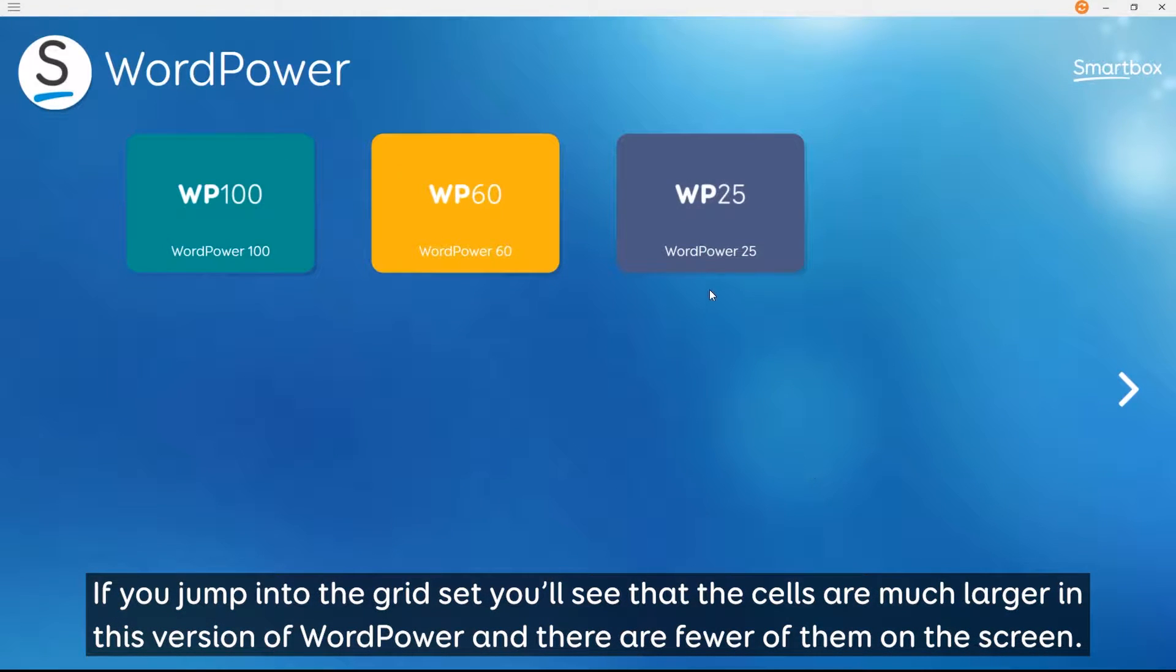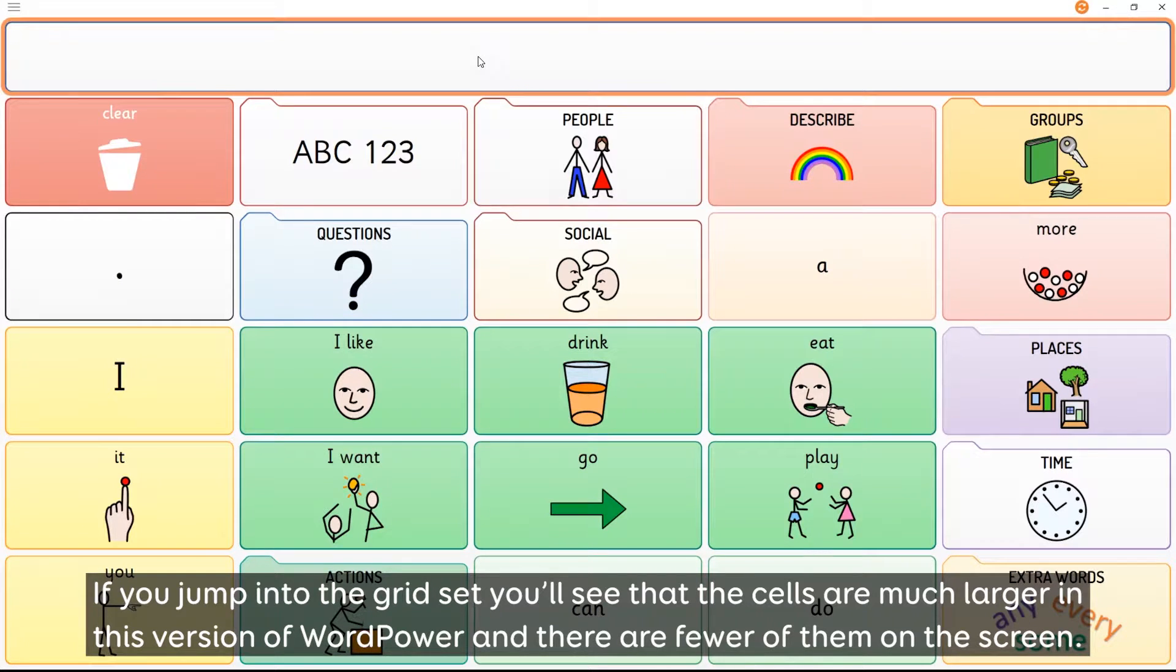If we jump into the gridset, you'll see that the cells are much larger in this version of WordPower and there are fewer of them on the screen.